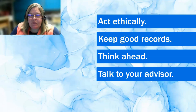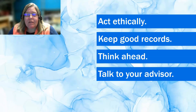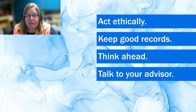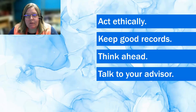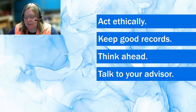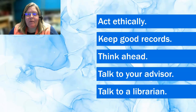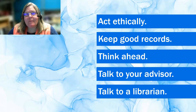Talking to your advisor is always a good thought, simply because they've been where you are now. They may have needed to figure out how to get permissions to use somebody else's work — they may have found they weren't able to get permissions for a figure or diagram and had to find alternatives. Talk to your advisor, talk to your committee. They're going to help you determine on a specific level how you might get around not using something, or how they went about getting permissions. And of course, talk to a librarian — we're here to assist you through this process.